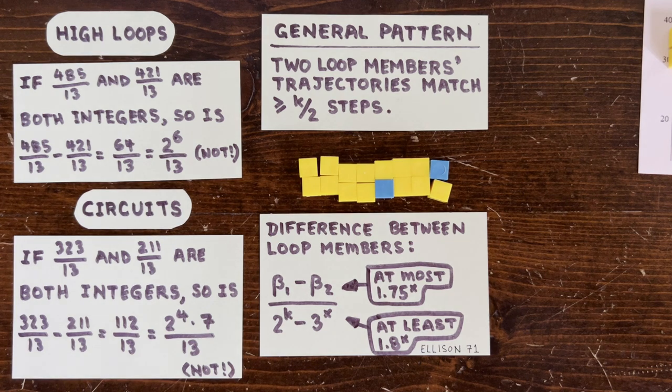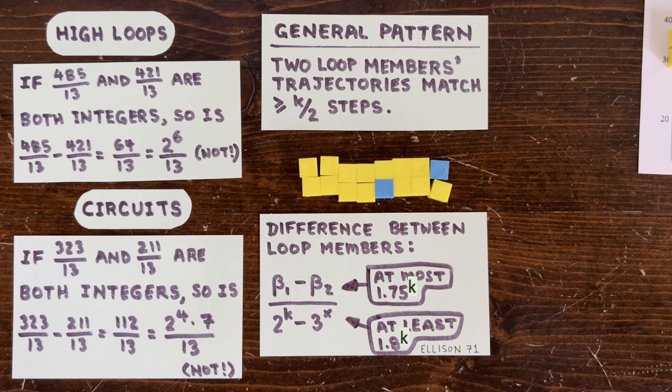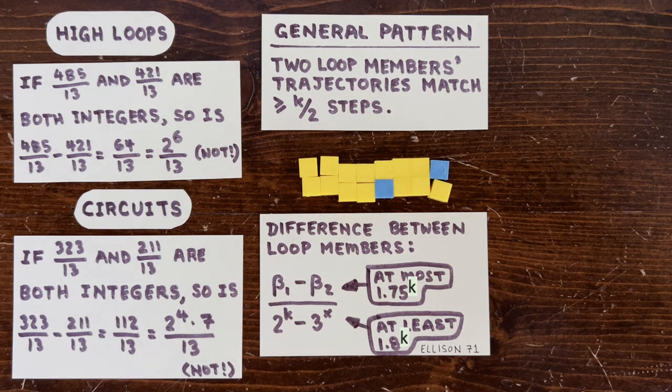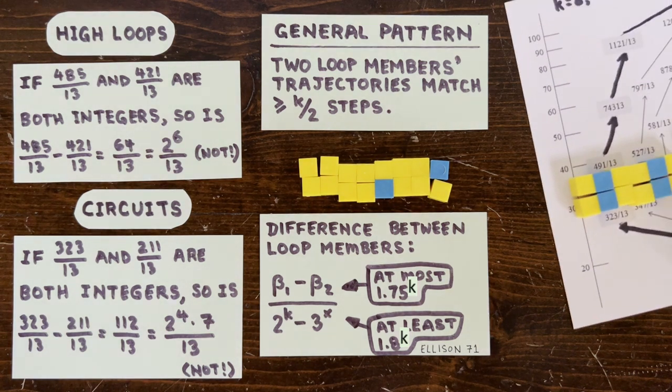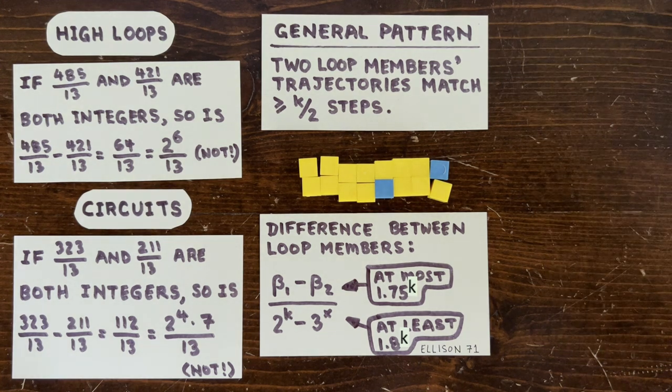while the denominator, according to Ellison's theorem, is always greater than 1.8 to the k. And so this thing could never be an integer. I know that's a little bit hand wavy, and hilariously, it doesn't even work for this case, because 1.8 to the k is greater than 13. But it works whenever k is greater than 27. So that's pretty satisfying progress.